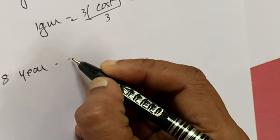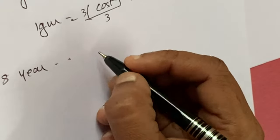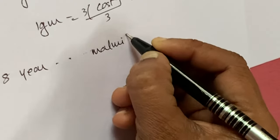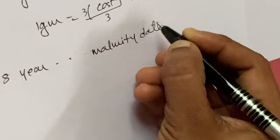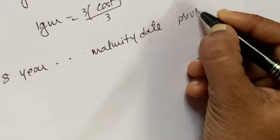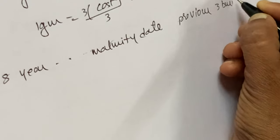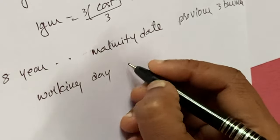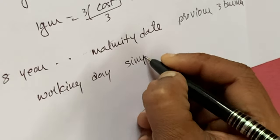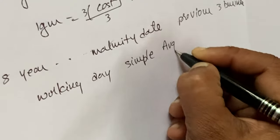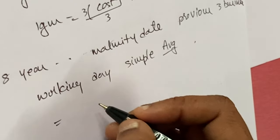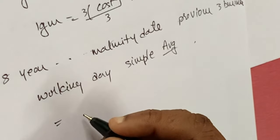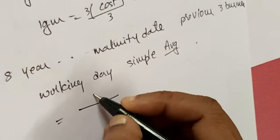At the 8-year maturity date, the gold rate is again calculated using the simple average of the previous three business working days of 99.9% carat gold. The maturity rate is divided by 3 days to get the average, and you receive the capital gain amount based on that gold rate.